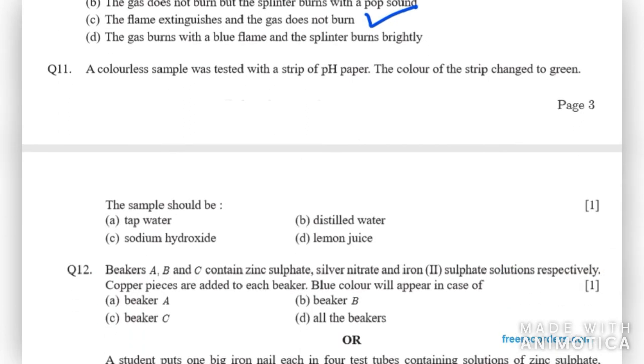Moving on to question number 11. A colorless sample was tested with a strip of pH paper. The color of strip changed to green. The sample should be what? It is being converted to green. That means the color is a neutral one. If the strip is green, that means it is neutral. And if it is neutral, distilled water should be the answer. Tap water can't be, sodium hydroxide is a base, lemon juice is acidic. So distilled water is the right answer.